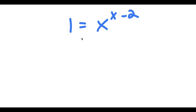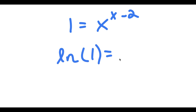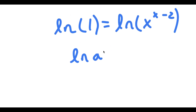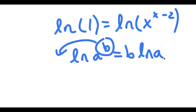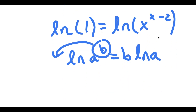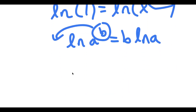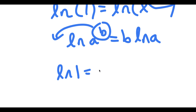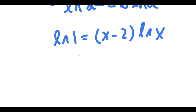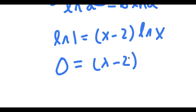Now if I take the ln of both sides, I get ln of 1 is equal to ln of x to the power of x minus 2. Since I have something of the form a to the power of b, I can move the exponent to the front, so this equals b times ln of a. So I have ln of 1 is equal to x minus 2 times ln of x.